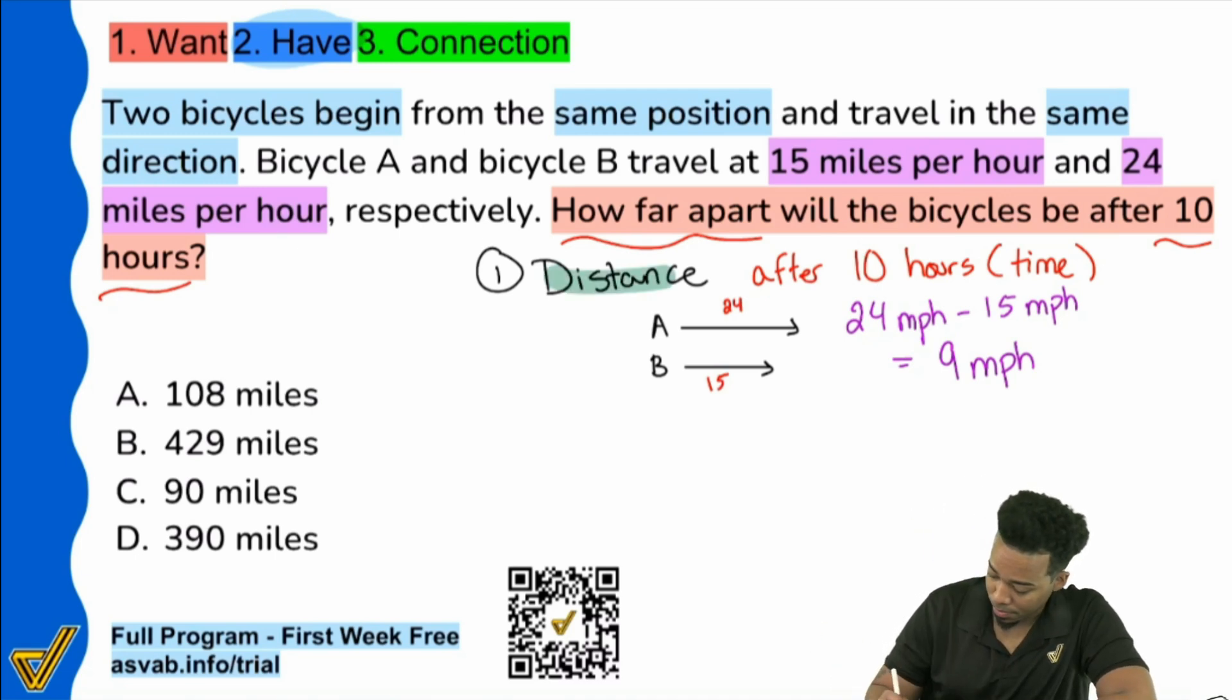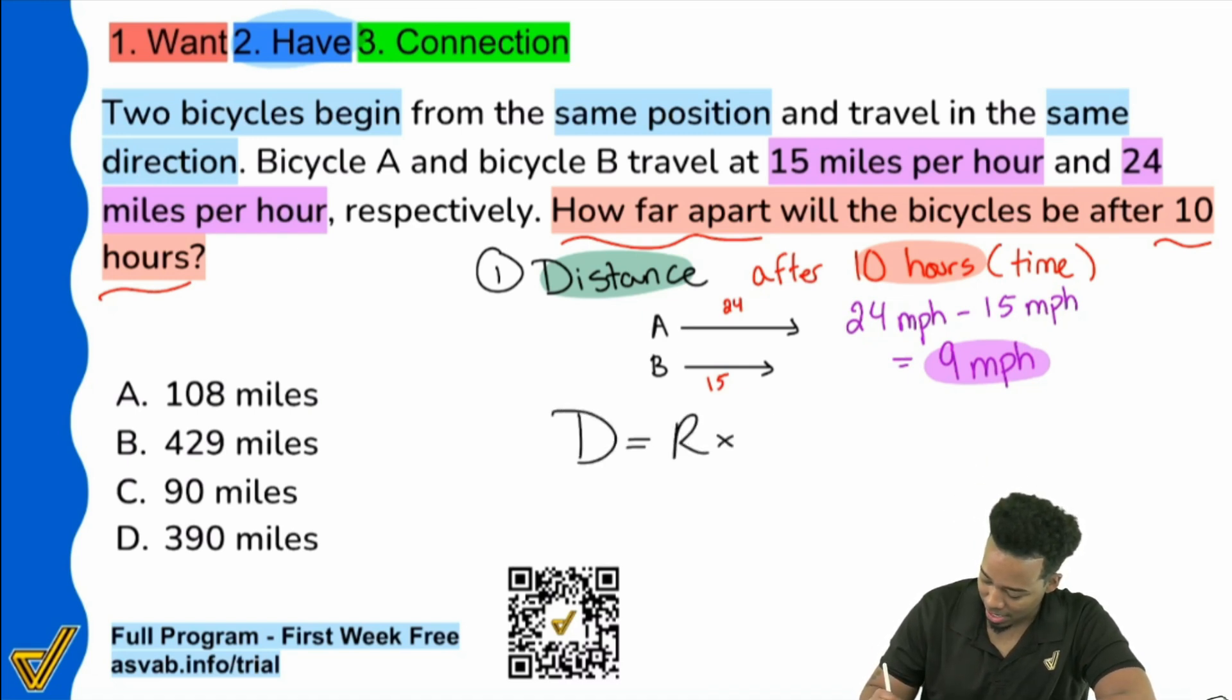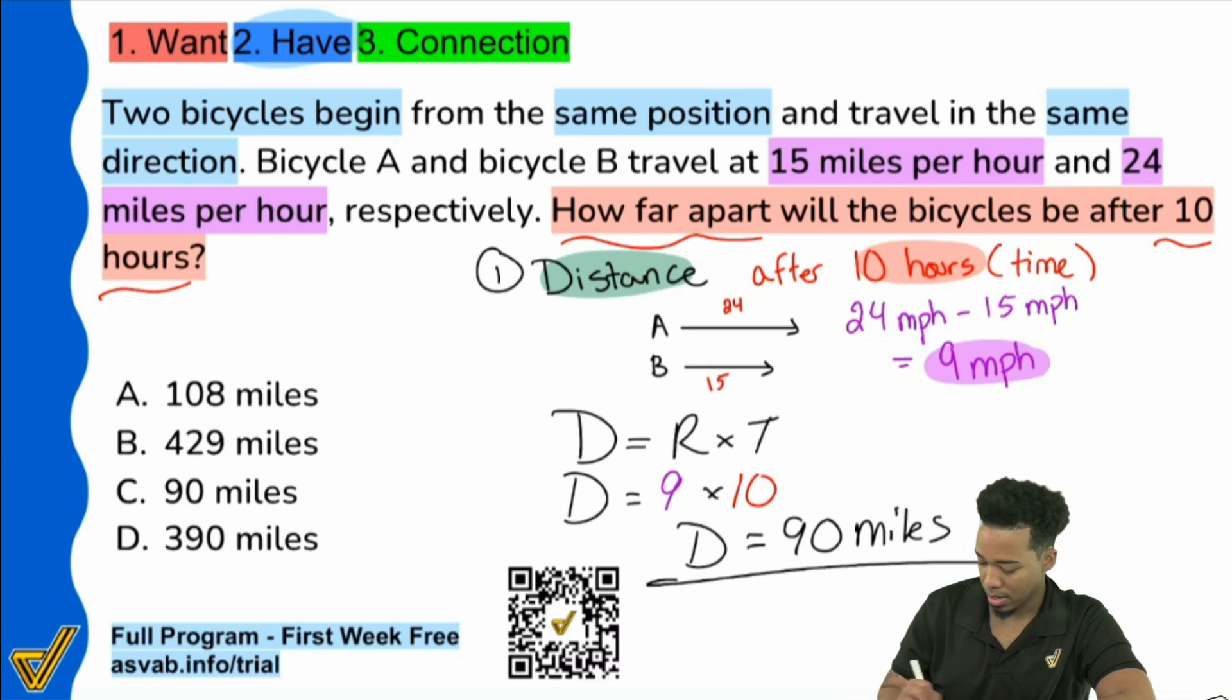We're looking for distance. Distance, we have our time, 10 hours, and we have our true rate because we had two rates. We found out what the true rate was and that's it. All we have to do is fill in the DRT formula and we're done. So, nice and easy here. Distance equals rate times time. The distance is going to be what we're looking for, so I'll leave that as is. The rate is going to be nine miles per hour and the time is going to be 10 hours. Nine times 10, very simply put, is 90. 90 miles and we are done.